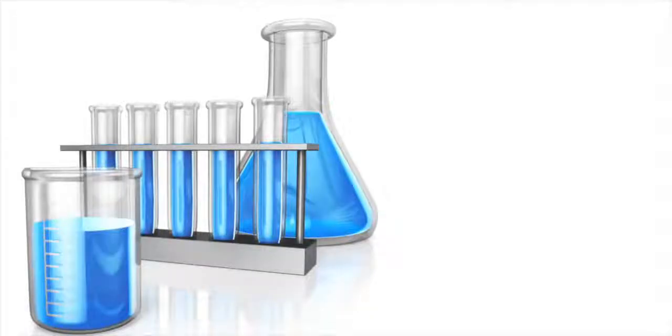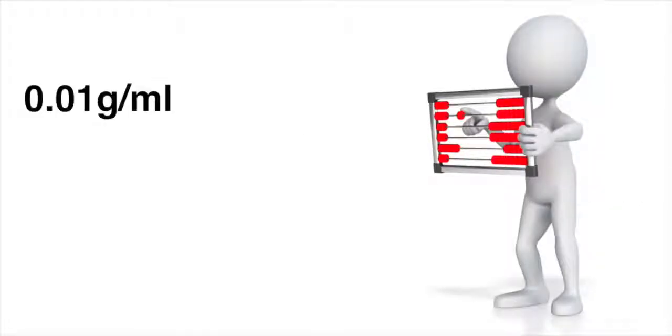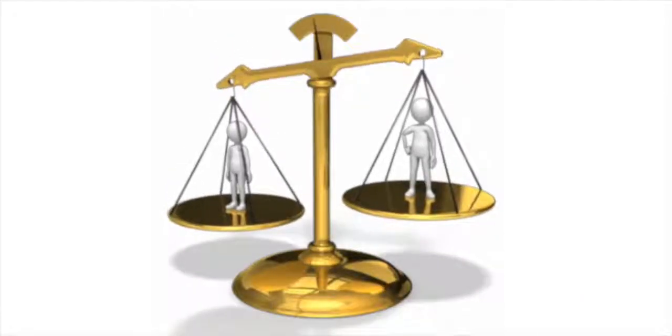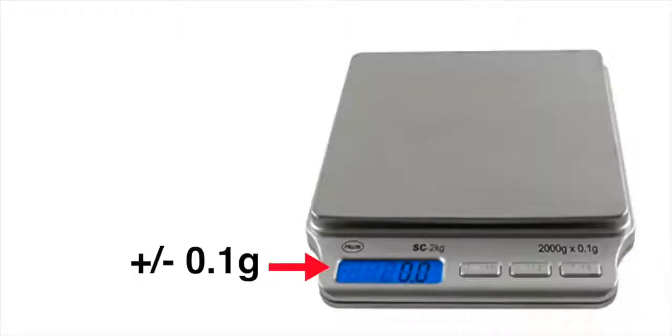But now suppose I needed a weaker solution. For instance, suppose I needed a concentration of, say, 0.01 grams per milliliter. I can't do that with this setup. Why not? Because then I'd need to be able to measure off 0.01 grams per milliliter times 25 milliliters, which equals 0.25 grams of sucrose. I'd need to be able to accurately measure down to two decimal places, or one-hundredth of a gram. But my scale can only measure down to plus or minus one-tenth of a gram. That just isn't precise enough. So what's a poor experimentalist to do?